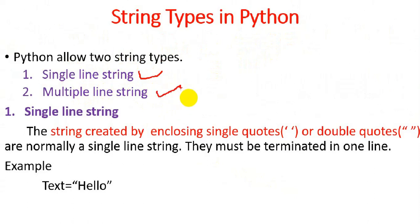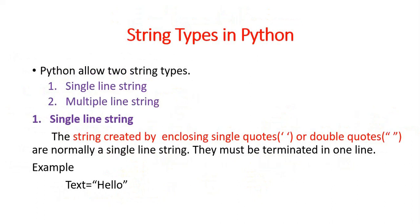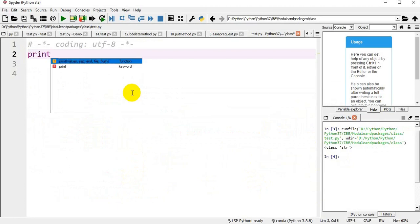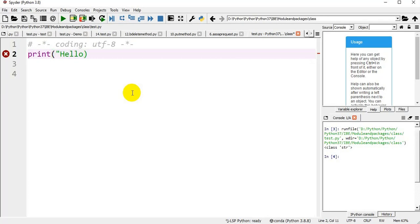Python allows two string types: one is a single line string and another is a multiple line string. A single line string is created by enclosing text in single or double quotation marks — it must be terminated in one line. The opening and closing quotation marks must both appear on the same single line.